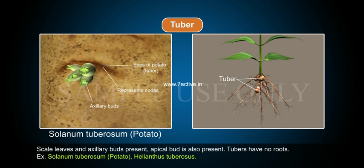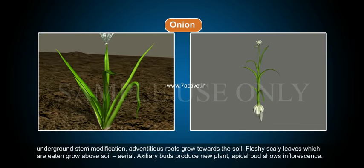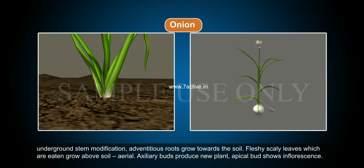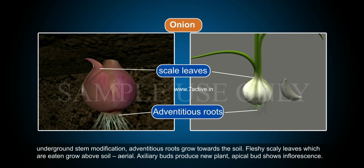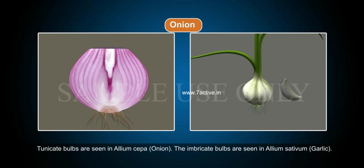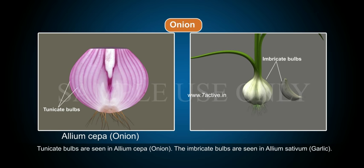Examples of tubers include Solanum tuberosum (potato) and Helianthus tuberosus. Onion is an underground stem modification. Adventitious roots grow towards the soil; fleshy scaly leaves, which are eaten, grow above the soil. Axillary buds produce new plants and the apical bud shows inflorescence. Tunicate bulbs are seen in Allium cepa (onion); imbricate bulbs are seen in Allium sativum (garlic).